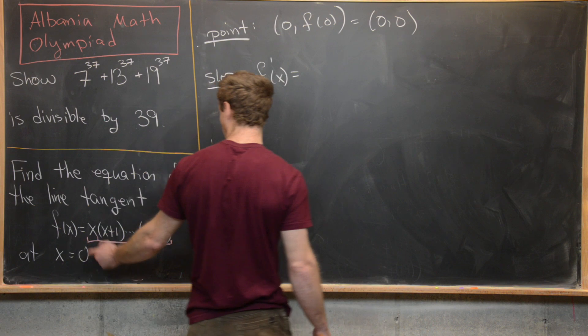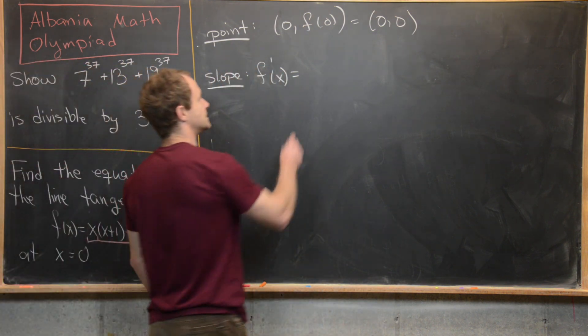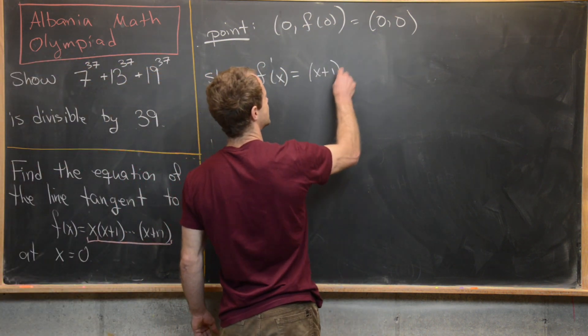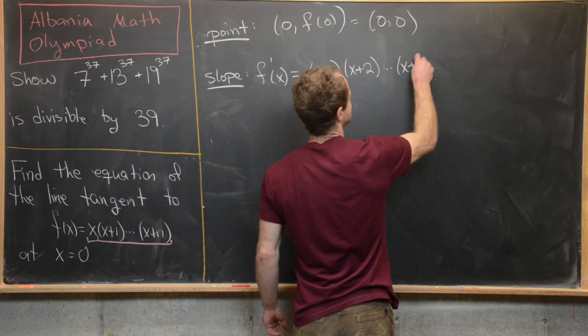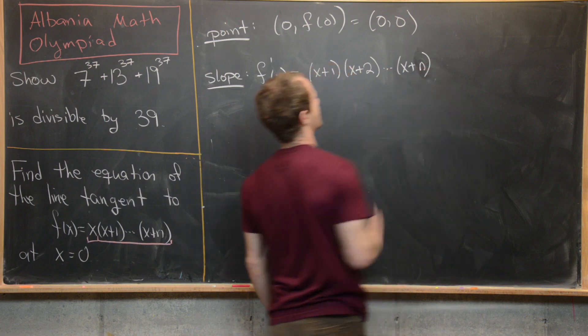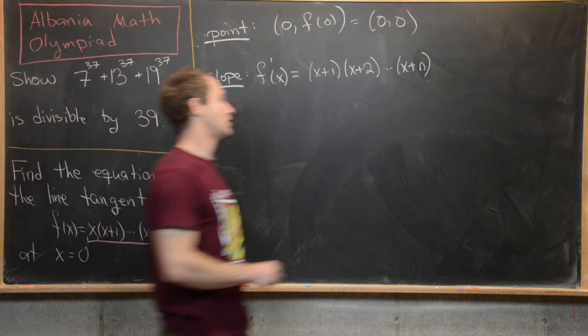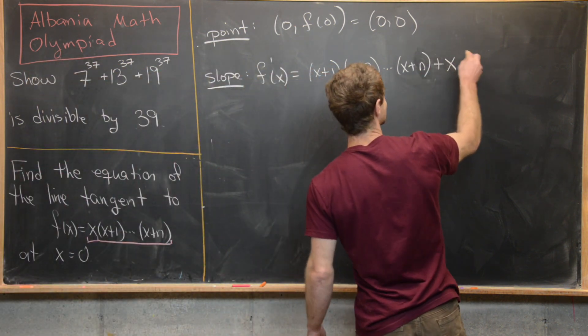So let's go ahead and do that. So we'll take the derivative of x first, but that's just one. And so that gives us (x+1), (x+2), all the way up to (x+n).